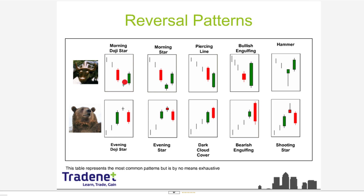If the trend is down and we see a reversal, we're not going to go long — we will anticipate a reversal in order to take profits. Let's say we're short a stock and we're looking at this downtrending stock. At that point, based on what we see — a doji star — we may consider taking a profit. The practical question is: where do we actually take action, where do we click the button?